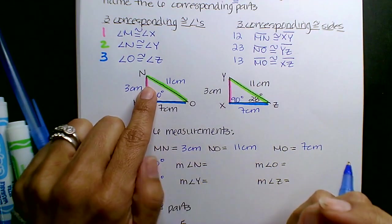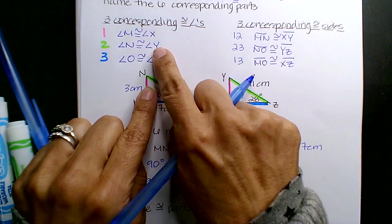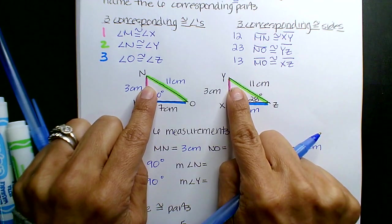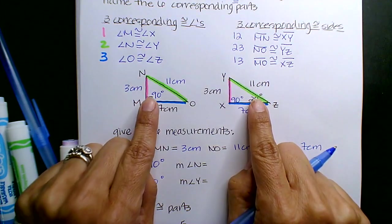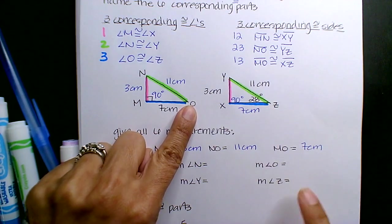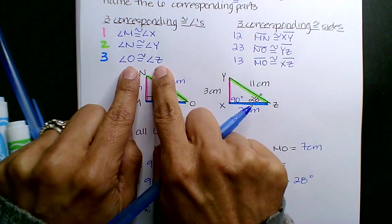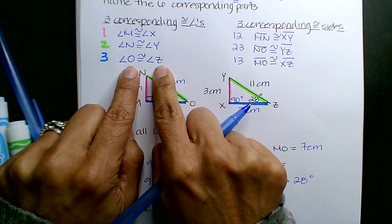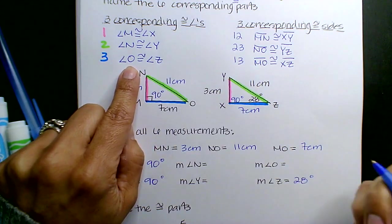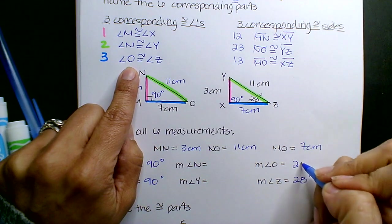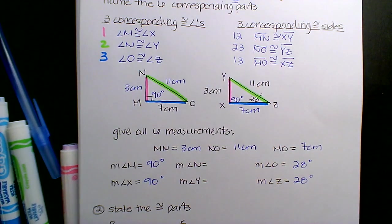What's the measuring of angle N? Well, N corresponds to Y, but N and Y don't have a degree. However, you do have O and Z. So look, Z is 28 degrees. O and angle Z correspond. They're congruent. So O is 28 degrees.